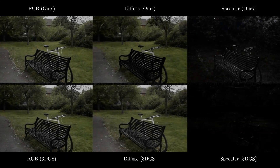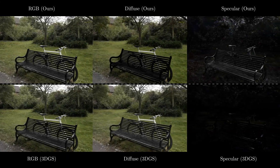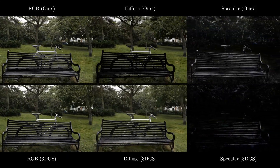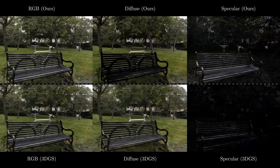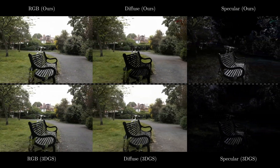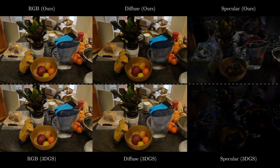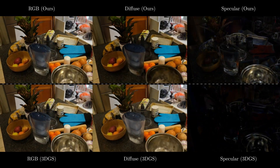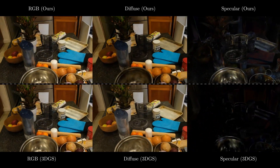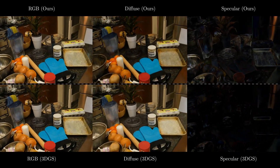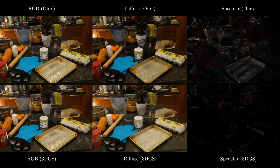In this comparison with 3DGS using low-order spherical harmonics, our method delivers cleaner diffuse textures and sharper, more realistic specular highlights, showcasing its ability to represent high-fidelity scenes.